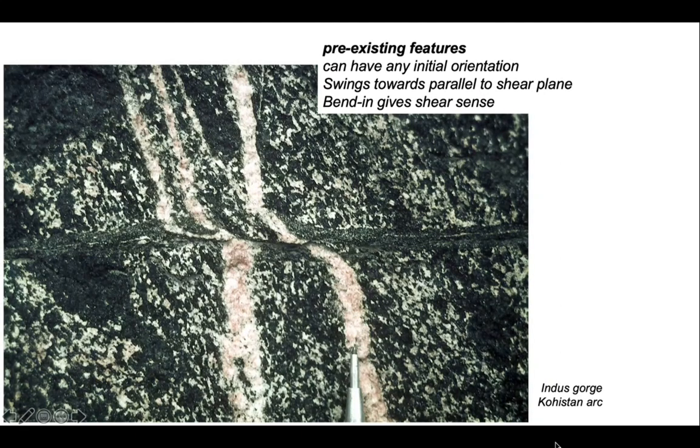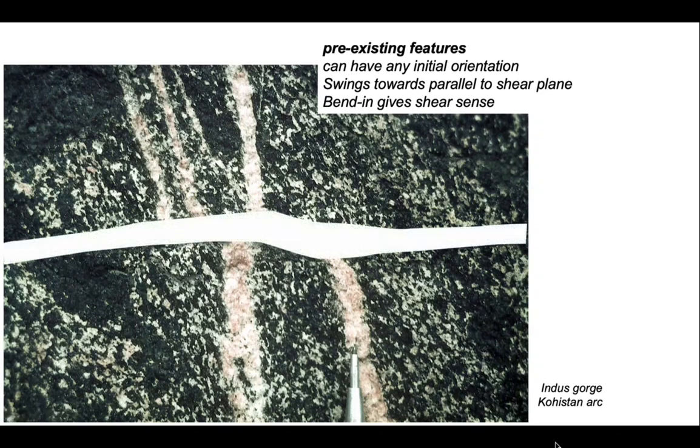Let's do that using this example from Kohistan again. Let's just grade out the shear zone and identify one of these little aplite zones here. So we can see the sense of movement.